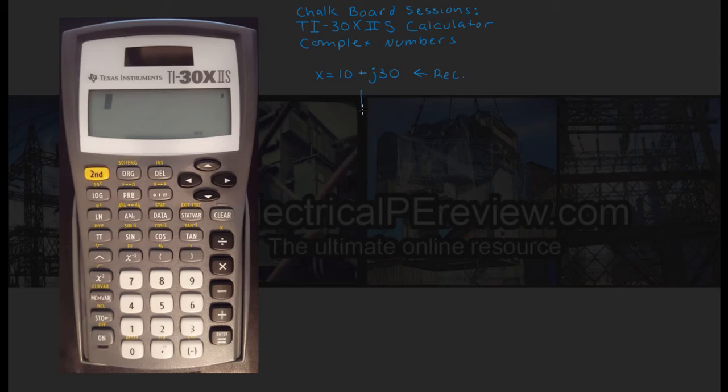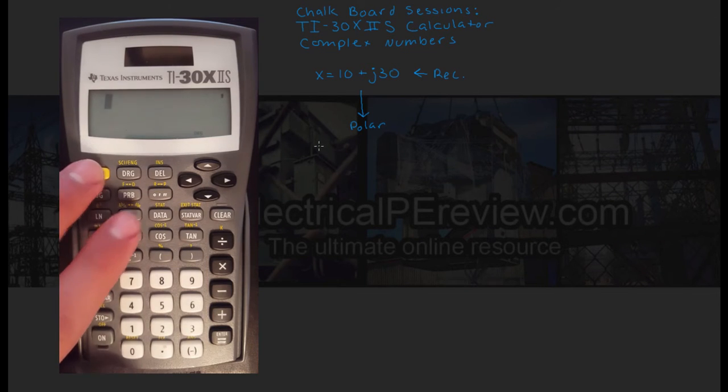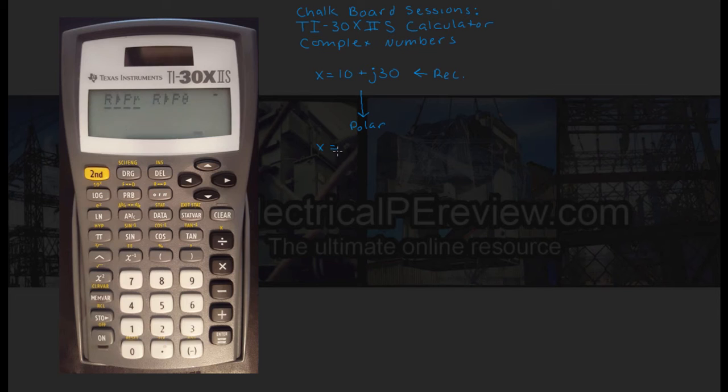Okay so we want to convert our x vector currently in rectangular to polar. We're going to select second r to p to access our Real to Polar menu. We're going to select r-pr for given a real vector, find the polar magnitude. We're going to type in 10 for our real component, comma, 30, since that's our imaginary component, and hit enter. This gives us 31.62 and is the magnitude of our polar vector.